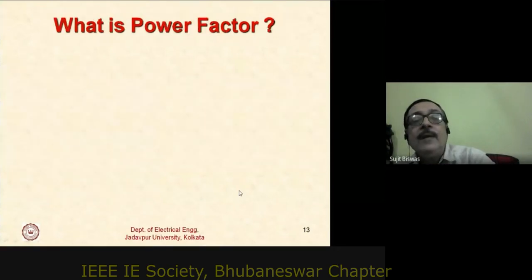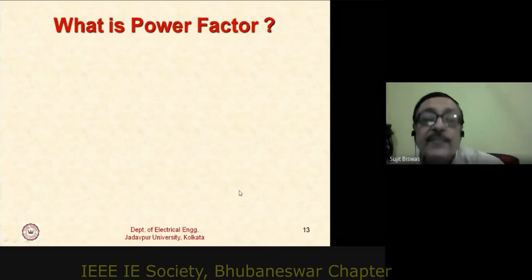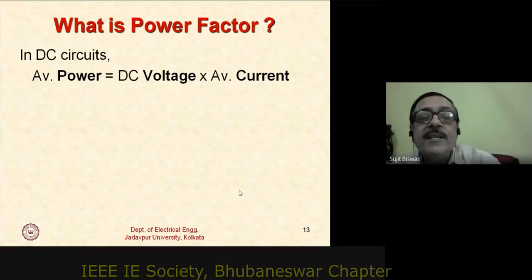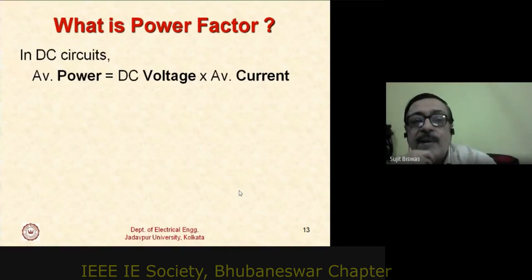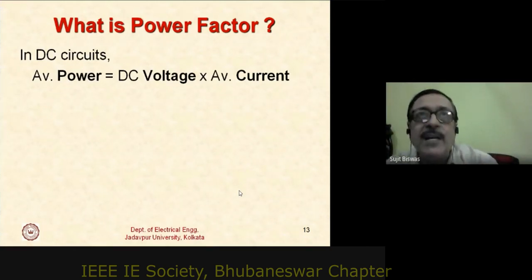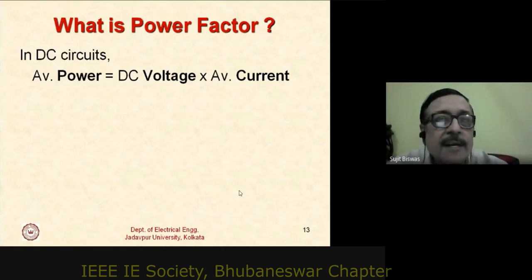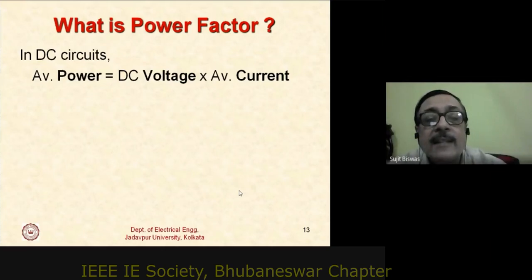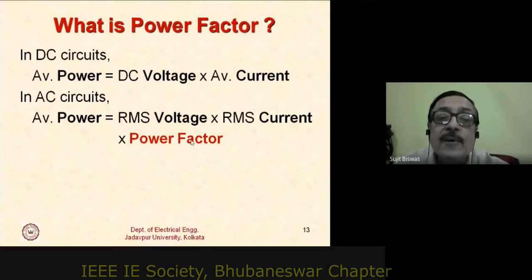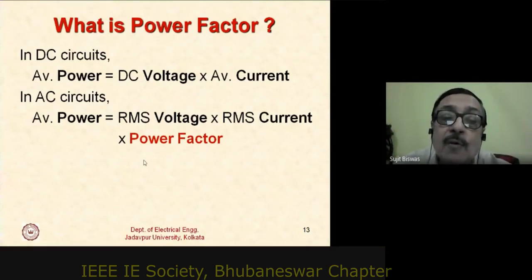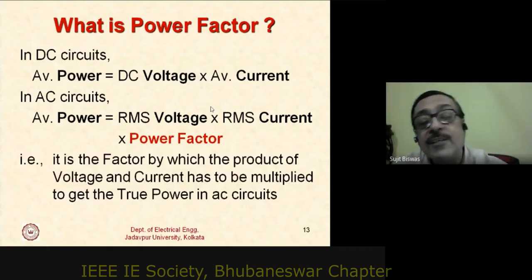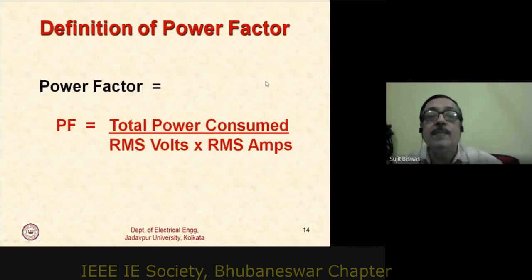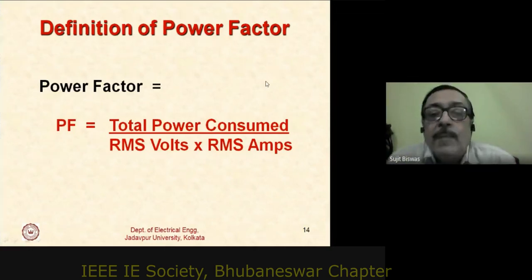In DC circuits, average power is simply the product of DC voltage and DC current. In AC circuits, multiplying RMS voltage by RMS current does not give power — you must multiply by an additional factor called power factor. Therefore, power factor is defined as: total power consumed divided by (V_rms × I_rms). This is the only definition of power factor.